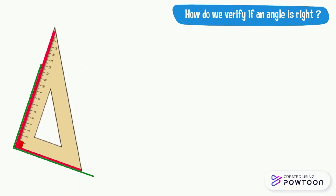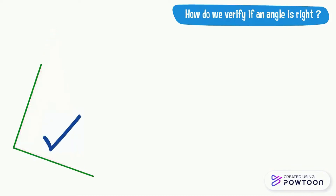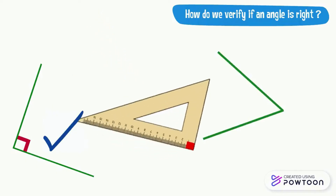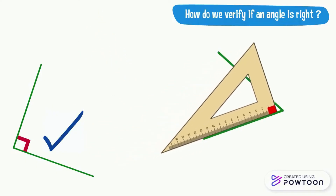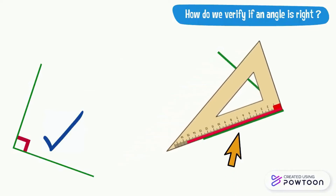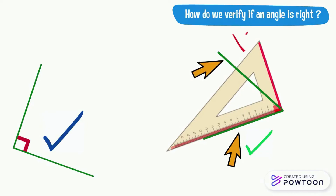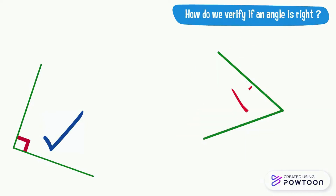Here, the sides of the right angle of the set square are exactly on the sides of the angle drawn. So this angle is a right angle, and we mark it with a small red sign like this. Now, we place the sides of the right angle of the set square on the sides of this other angle. Note that one side follows the edge of the set square, but the other one does not follow the edge of the set square at all. So this angle is not a right angle.